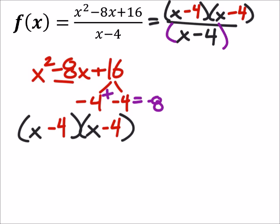If it helps you to see this in parentheses, then put it there. But at least one of these will cancel out, leaving us with f of x equals x minus 4.